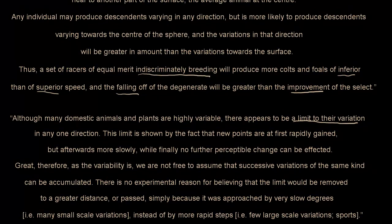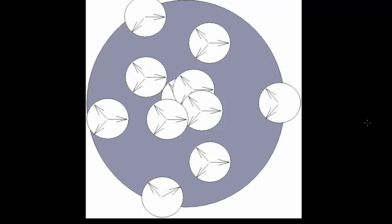So if an individual near the surface of Jenkin's sphere happened to cross with another individual located closer to the centre, the children would tend to be drawn closer towards the centre, approximating more closely the character of those at the centre rather than those at the surface. However, implicit in Jenkin's analysis is the idea that two individuals near the surface of the sphere might reproduce, in which case their children would retain their position near the surface, but there would never be an ability to escape beyond the limits of the sphere — the species. We'll continue with Jenkin's criticisms of Darwin in the next video, video 36.